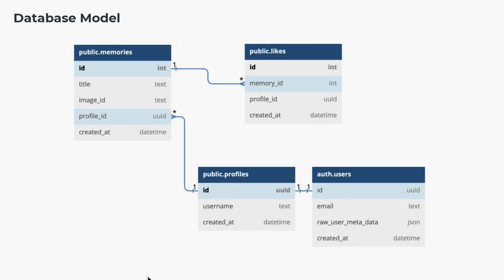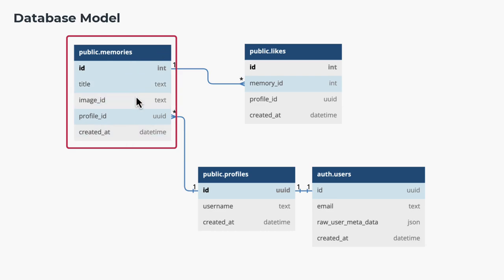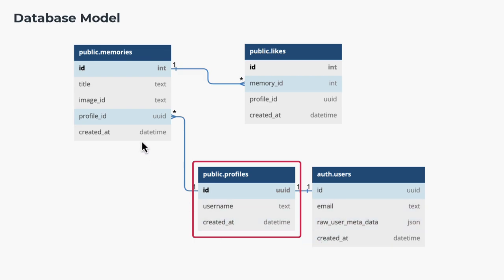It would be useful to describe how we're modeling our data in our database. We have three tables that we'll be creating. The memories table represents our entries — each entry would have a title, an image ID, as well as a foreign key constraint pointing to the profile which created this particular memory. Each profile is added automatically whenever a new user is created, because our auth.users is not directly accessible from our app. So our public profile ID points to the ID in our auth.users table, and the username will be extracted from raw user metadata.